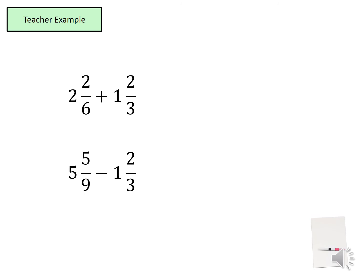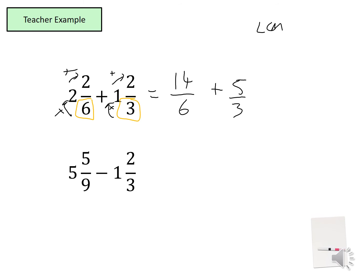I'm going to go through two more examples. The difference between this question and the last is that the denominators are different. So it still works the same way, however we're going to have to find a common denominator. First I'm going to convert these mixed numbers into improper fractions. Six times two is twelve, add the two becomes fourteen — so we have fourteen over six. Plus three times one is three, add the two becomes five — plus five thirds. In order to add these fractions, we must have the same denominator, so I'm going to calculate the lowest common multiple of six and three.